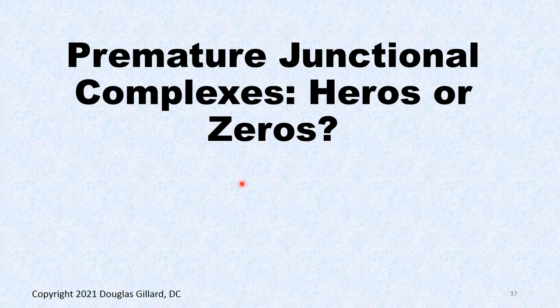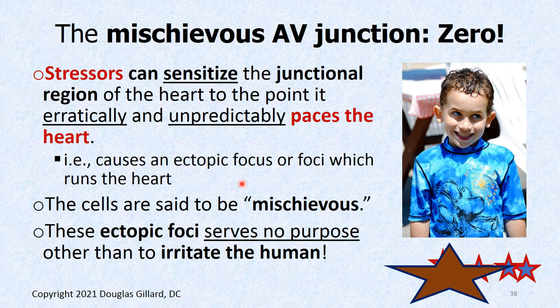Premature junctional complexes — heroes or zeros? Let's talk about the mischievous side first. Any stressors like alcohol, caffeine, and that whole list can sensitize the junctional region cells, make them twitchy, and they can radically and unpredictably depolarize — stealing heartbeats from the SA node for no reason other than mischief. The atria and ventricles can also be mischievous, but the junctional region is particularly notorious.